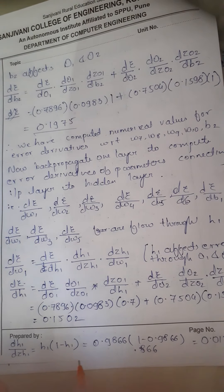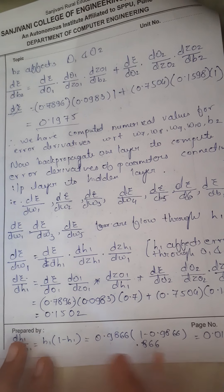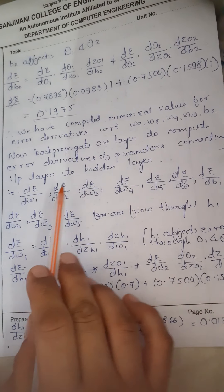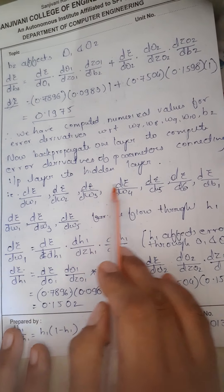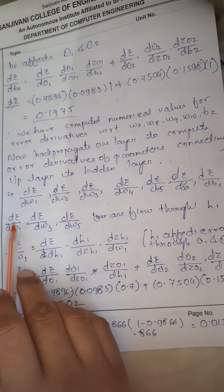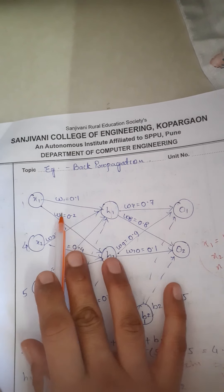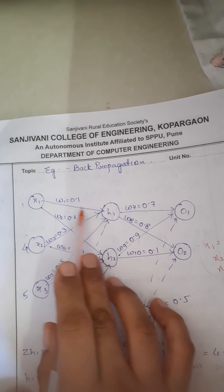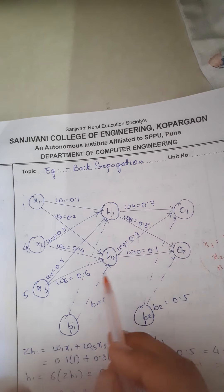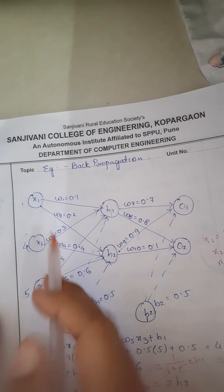Now further we have calculated all the numerical values for the error derivatives with respect to W7, W8, W9, W10. Now we have to back-propagate — go back one layer to compute the error derivative of the parameters connecting the input layer to the hidden layer. That is what we want to compute further: error with respect to W1, W2, W3, W4, W5, W6, and also with respect to DB1. If you check W1, W3, and W5 — these all flow through H1. W1, W3, W5, and B1 are related to H1. And with respect to H2 we have W2, W4, W6, and B1.